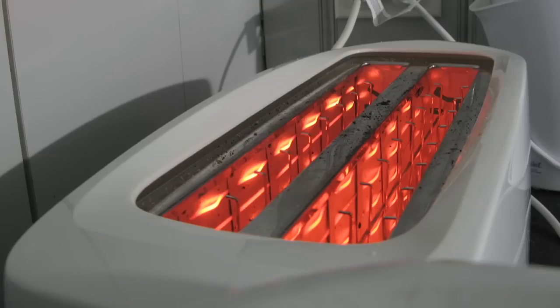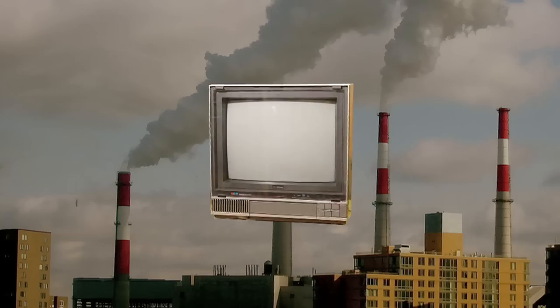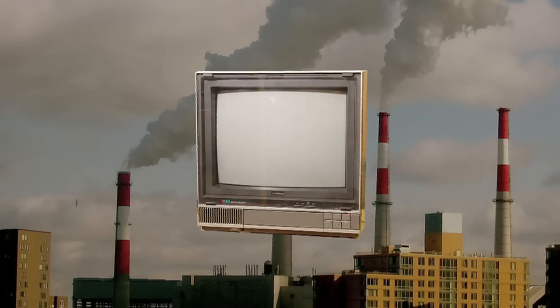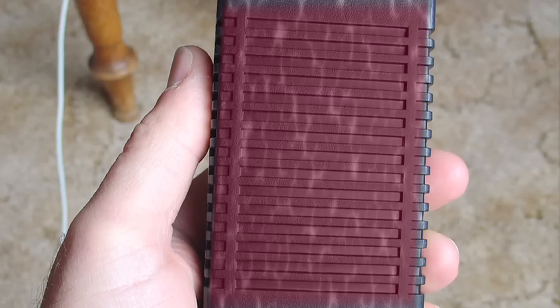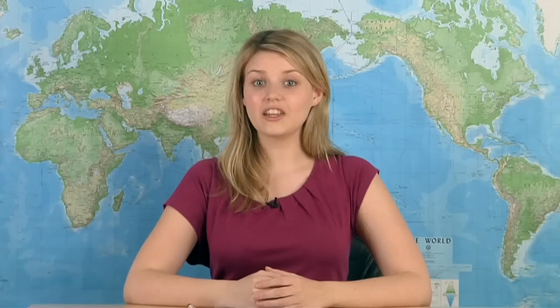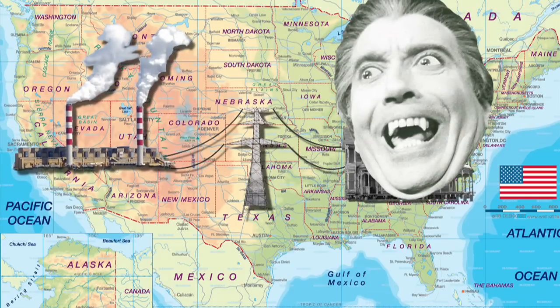Many other household appliances use electricity even when turned off. When your TV is on standby, it uses what is known as phantom power. To see if your plugged-in but turned-off appliances are using energy, touch the transformer. If it's warm, it's wasting electricity. In the US, it's estimated that 5% of residential electricity is taken by energy vampires.